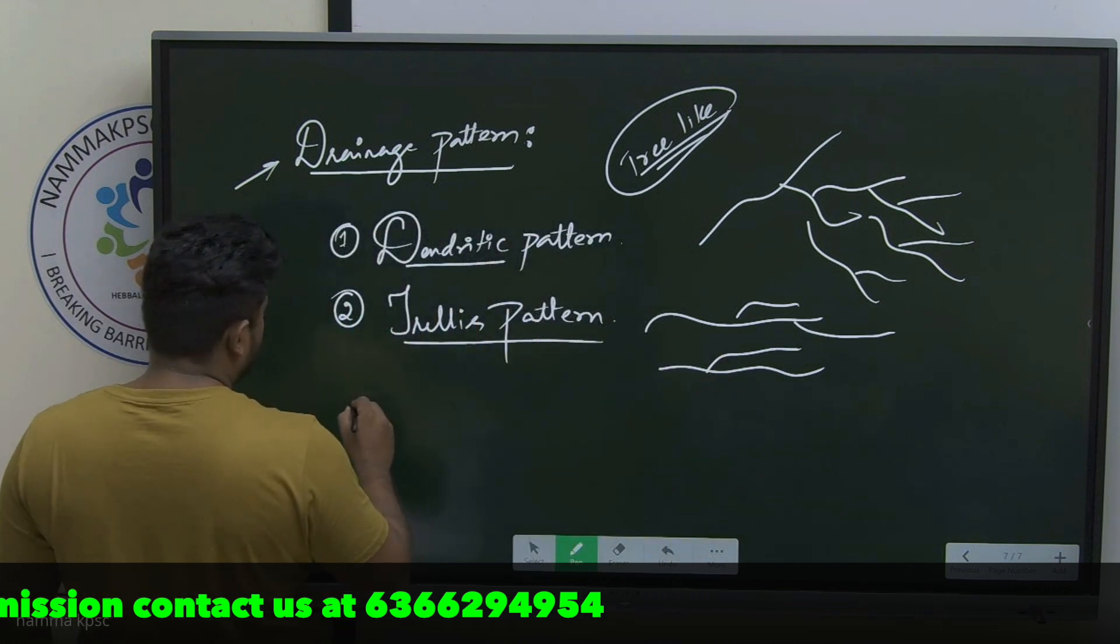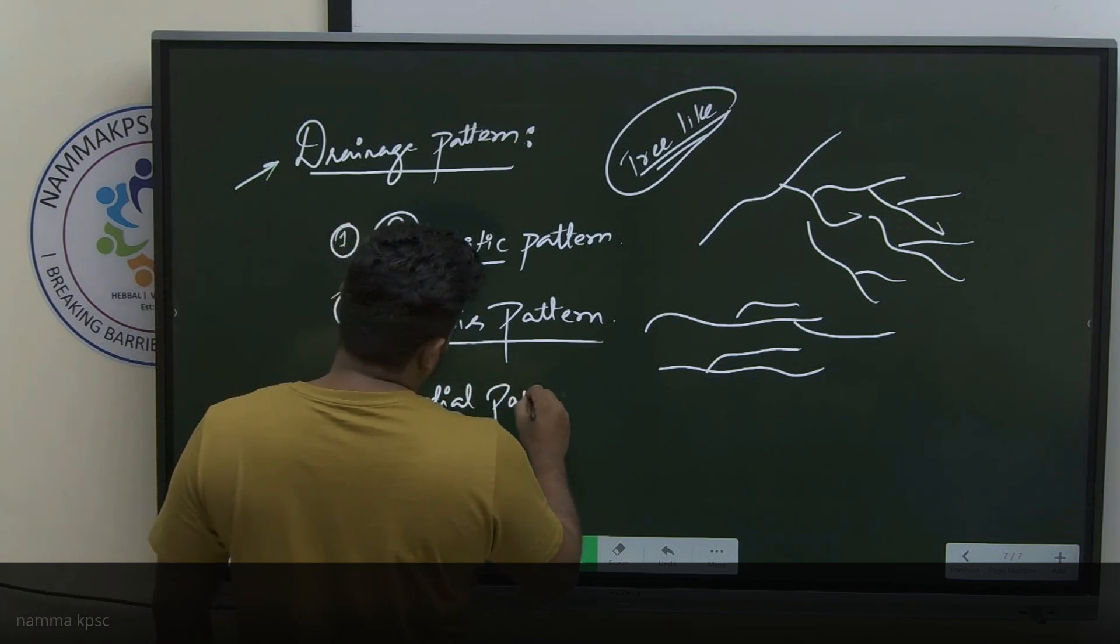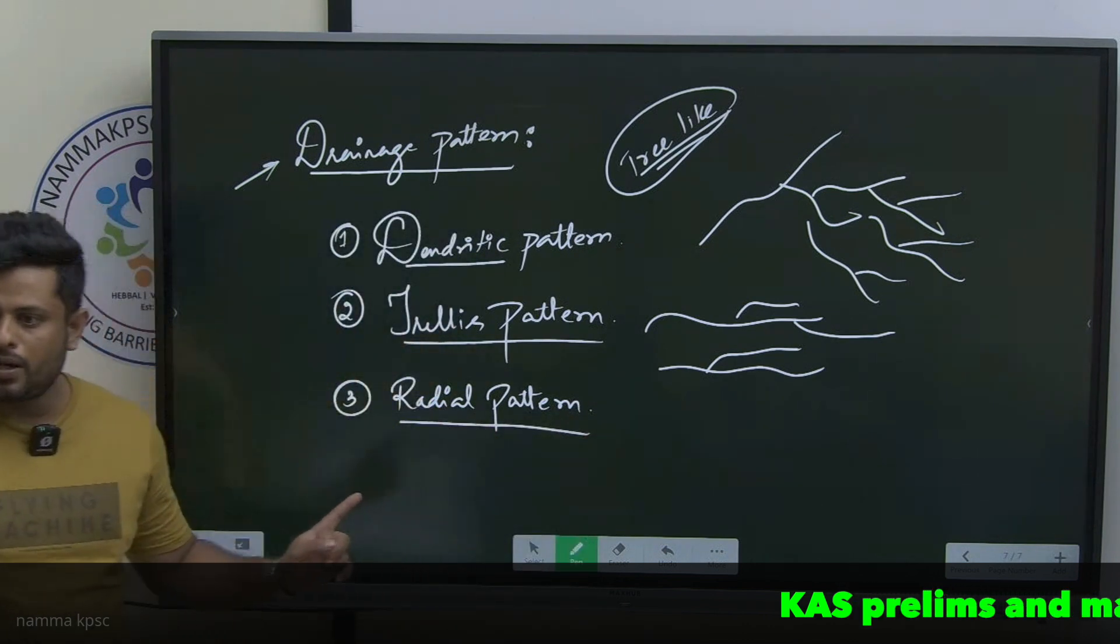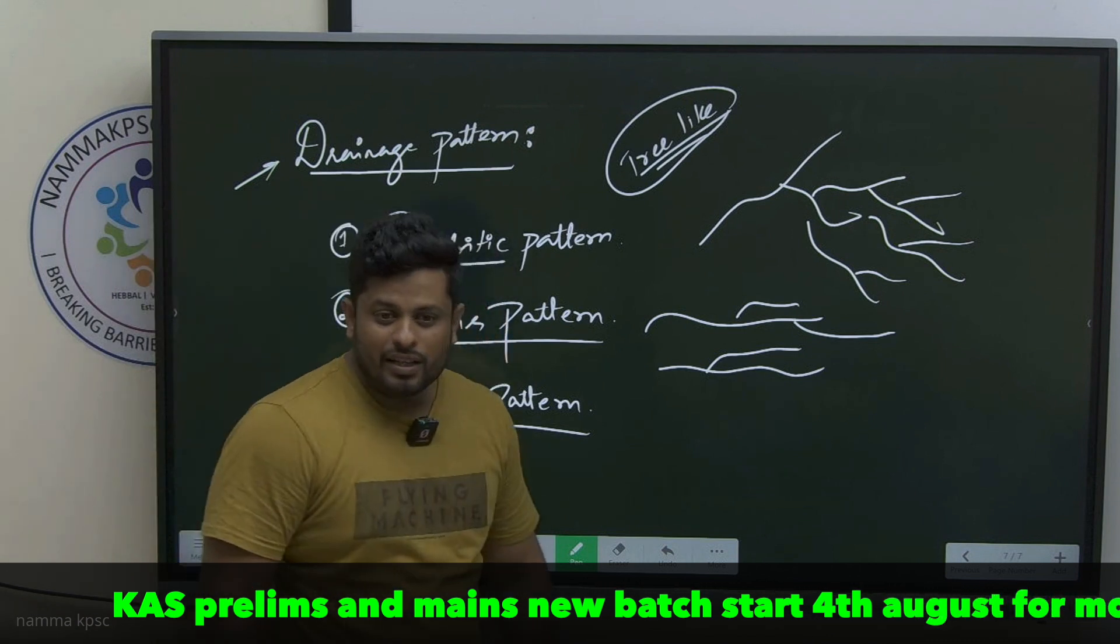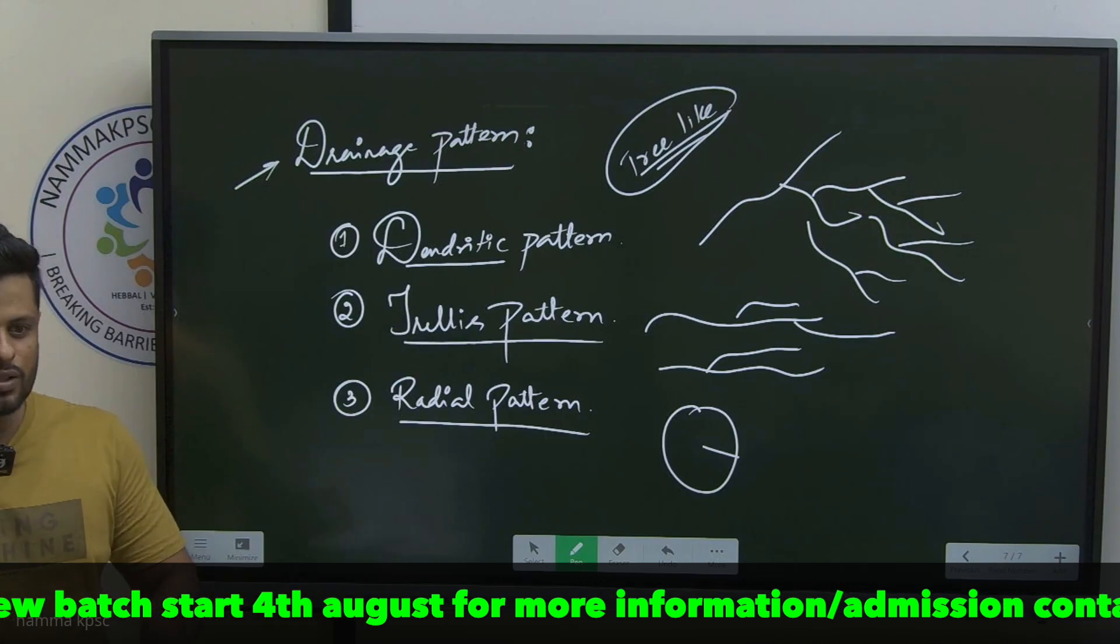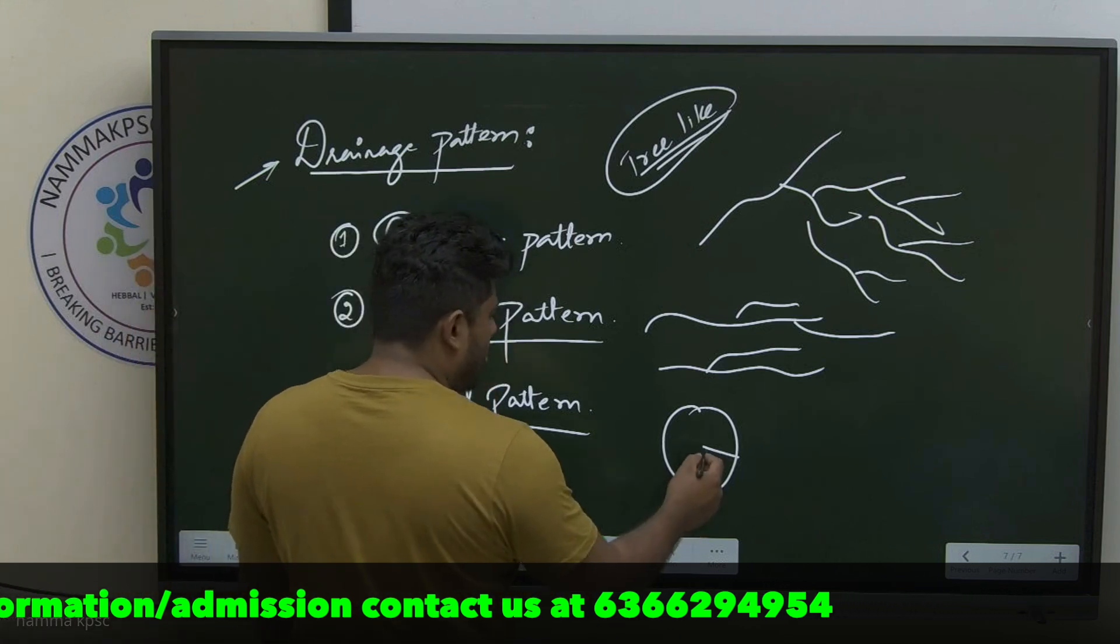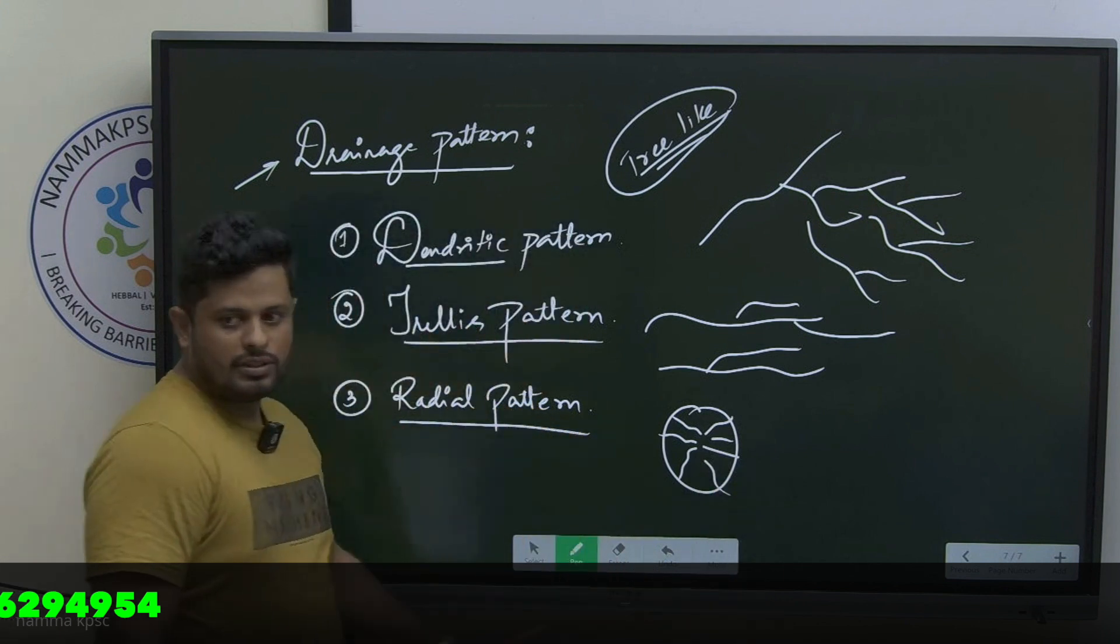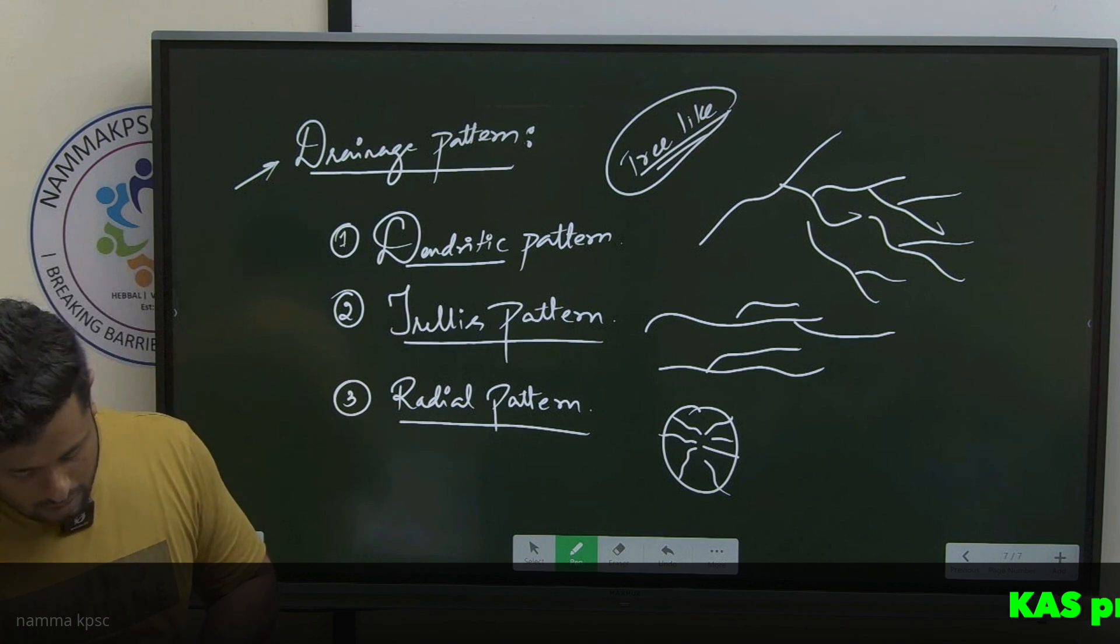Dendritic pattern, trellis pattern, radial drainage pattern - there are number of other patterns and I'm restricting myself to the pattern that is applicable to the rivers of Karnataka. Radial drainage pattern - radial means radius, a line drawn that joins the center to the circle. If there are multiple rivers that originate somewhere in between and flow outside in this way, this pattern is what we call it as a radial drainage pattern.